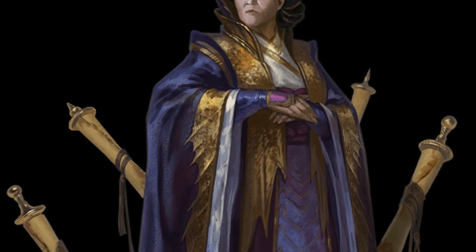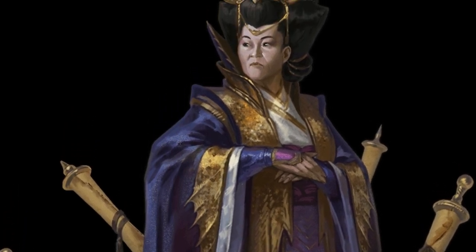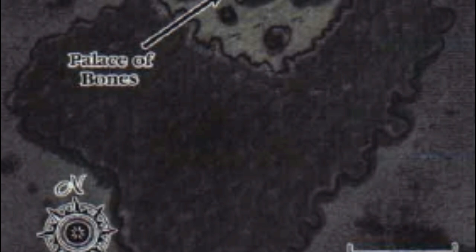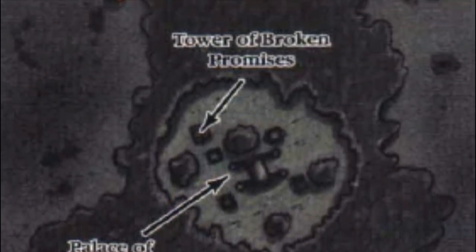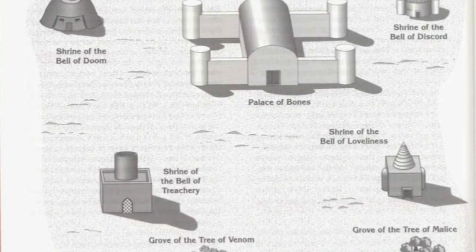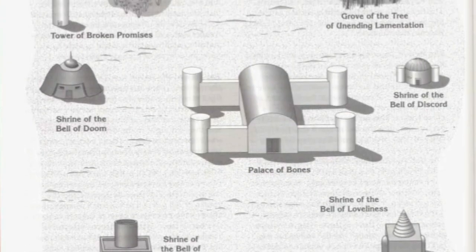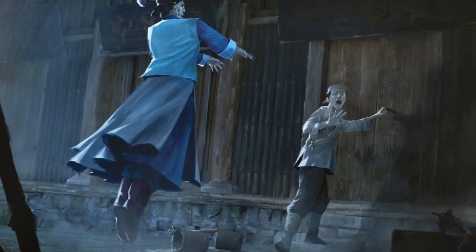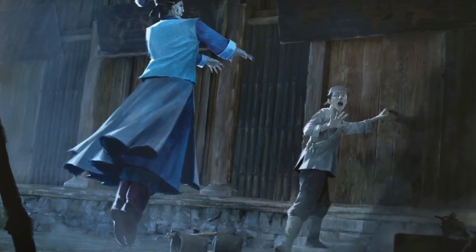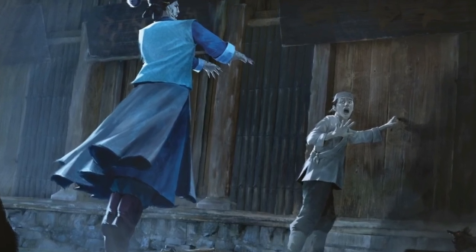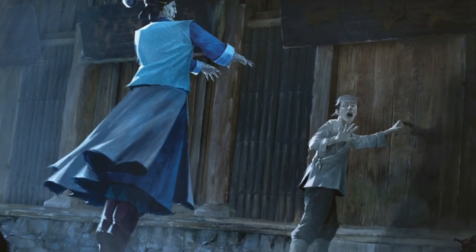The Icat domain was an excellent surprise for me. The original domain consisted only of a palace surrounded by a forest, inhabited only by the Dark Lord and her doctors. Honestly, the classic setting of Icat was very difficult to use in a more complex adventure, and I would totally replace the classic version with the new version featured in the Van Richten Guide to Ravenloft.